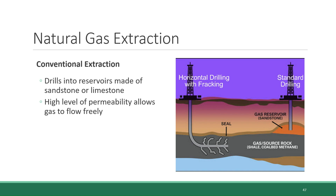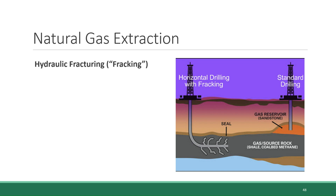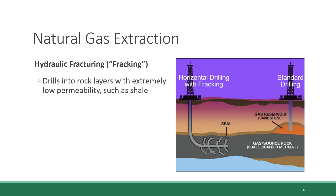This is not the case for all types of rocks that form natural gas reservoirs, though. Hydraulic fracturing, also known as fracking, is an approach used to drill into rock layers that have extremely low permeability but are nonetheless storing pockets of natural gas. An example of such a rock type is shale.